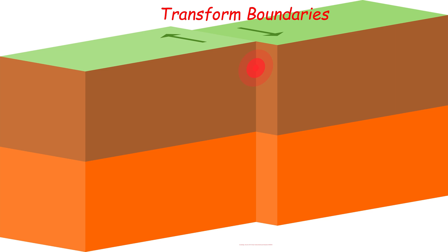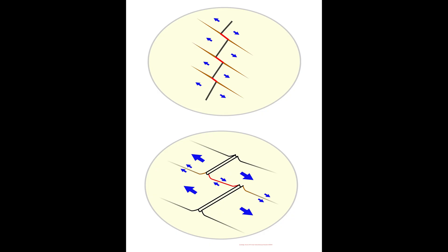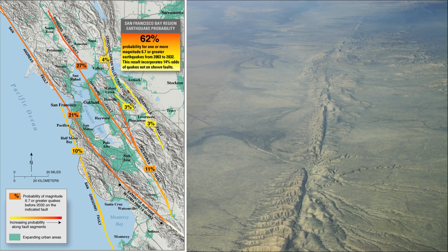Transform boundaries occur when two plates grind past one another along transform faults, where plates are neither produced nor destroyed. Along a fault, strong earthquakes can occur. An example of a transform boundary is the San Andreas Fault in California.